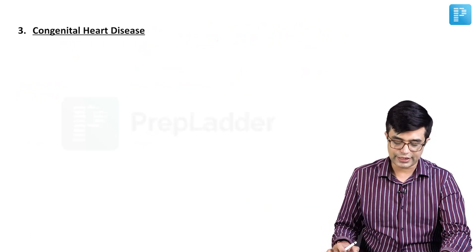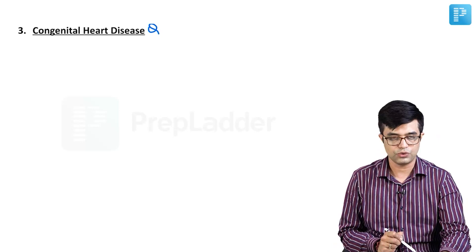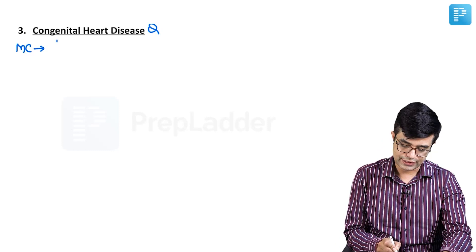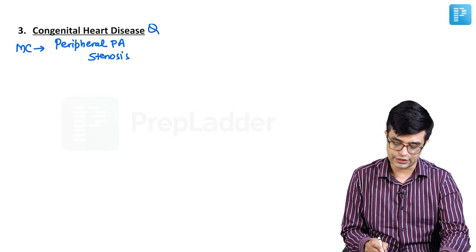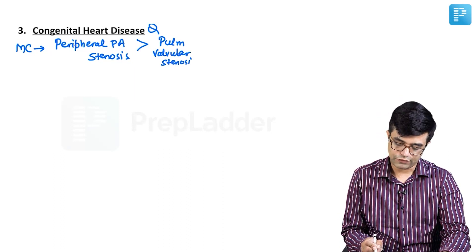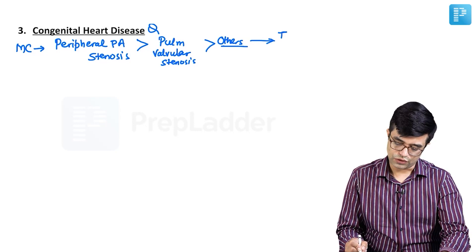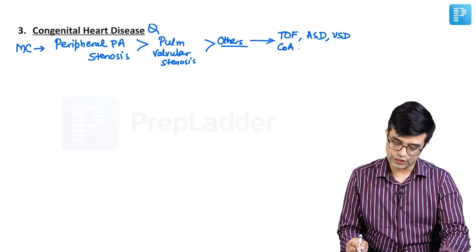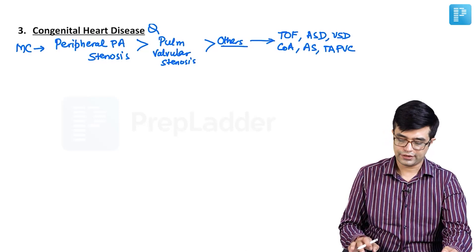Moving to congenital heart disease — this is an MCQ already asked in super-speciality exams. The most common congenital heart disease in these patients is peripheral pulmonary artery stenosis, followed by pulmonary valvular stenosis. Other conditions include tetralogy of Fallot, ASD, VSD, coarctation of aorta, aortic stenosis, and sometimes TAPVC.